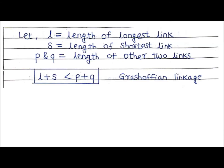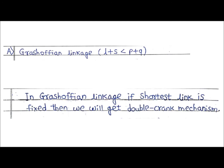To generalize, let L be the length of the longest link, S the length of the shortest link, and P and Q the lengths of the other two links. If L + S < P + Q, the four-bar linkage is called a Grashofian linkage. In a Grashofian linkage, if the shortest link is fixed, we get a double crank mechanism. In the next parts, conditions for crank-rocker and double rocker mechanisms will be derived.